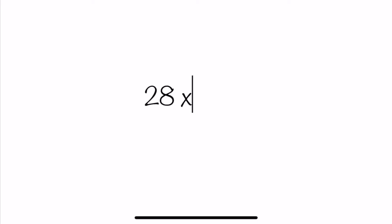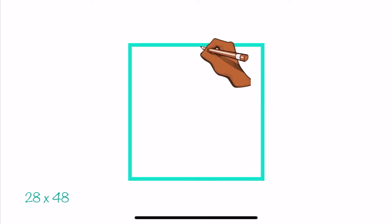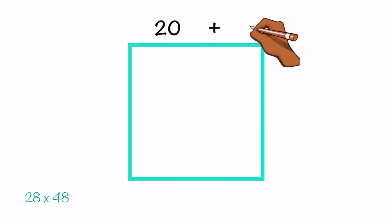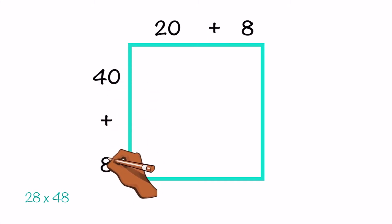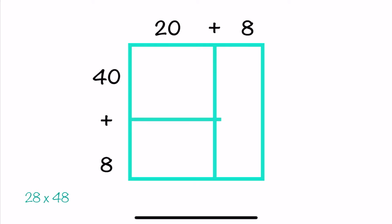We have 28 times 48. First step is the same — you're going to draw a box, but make it look more like a square since both numbers have the same number of digits. Then we're going to write both numbers in expanded form, one on the top of the box and one on the side of the box.